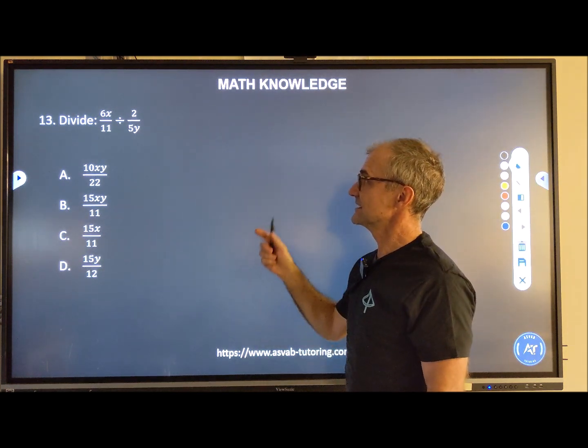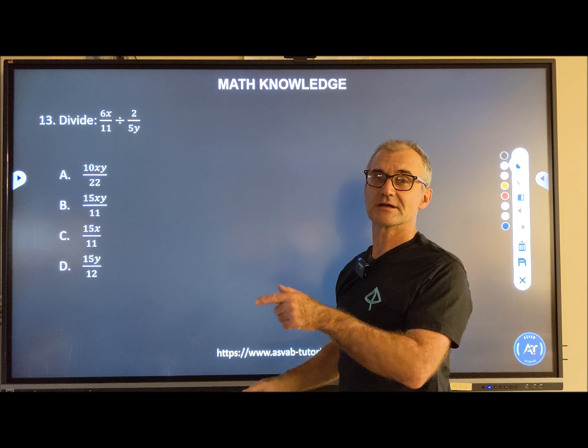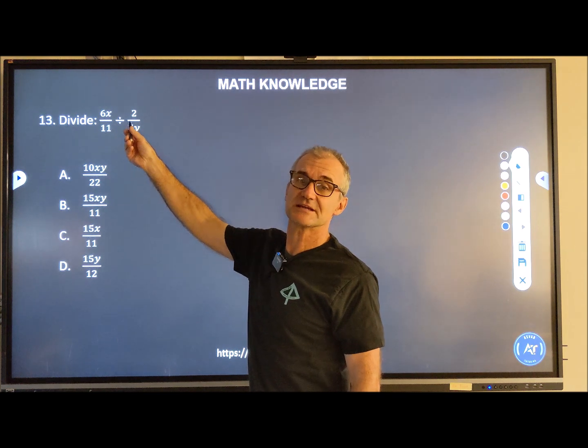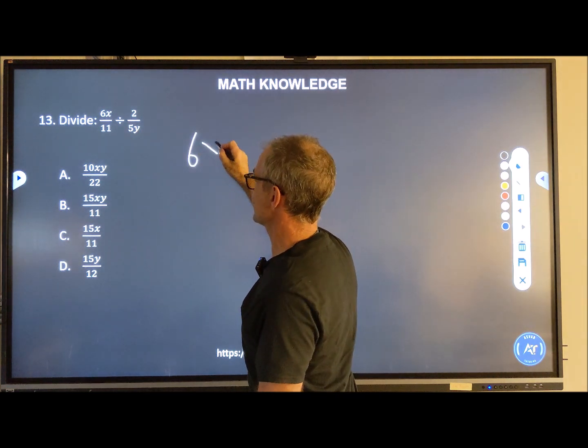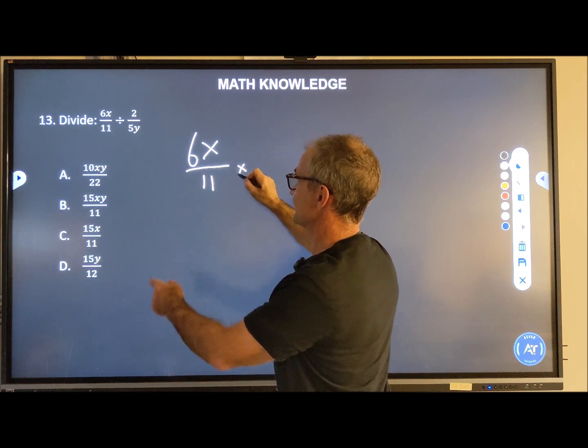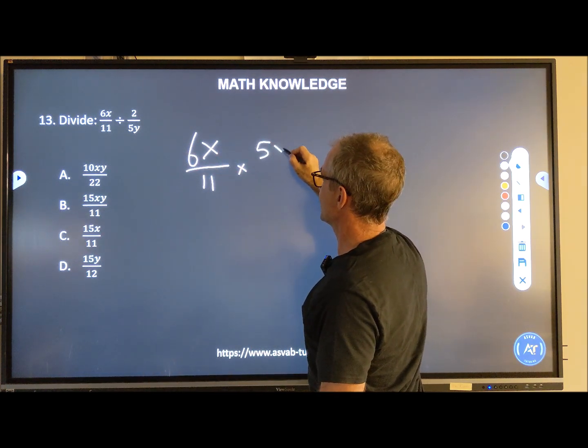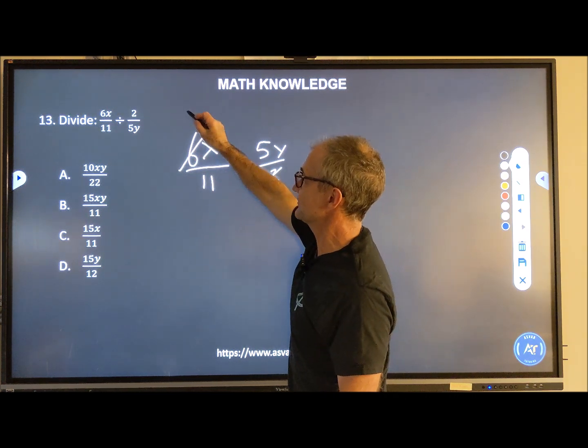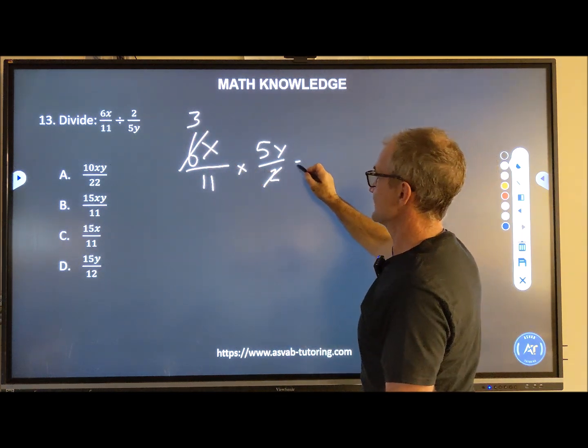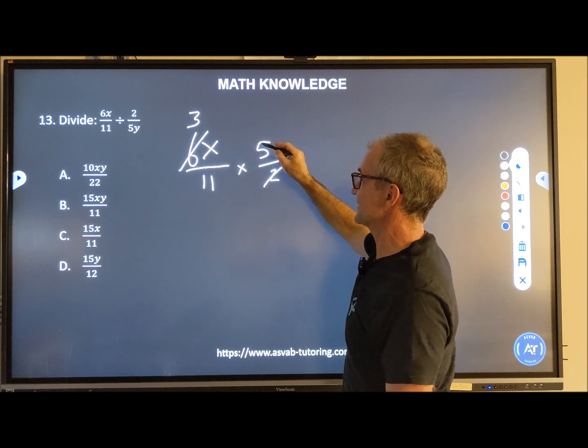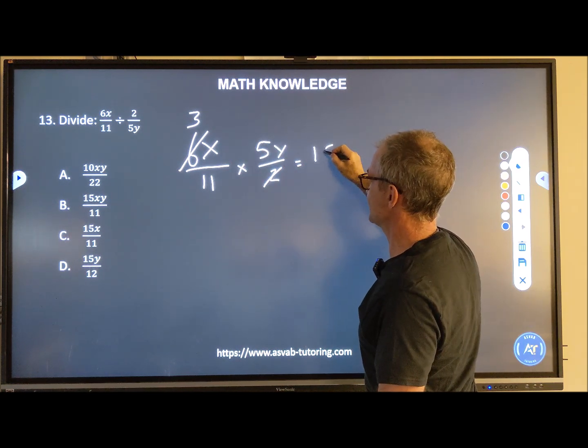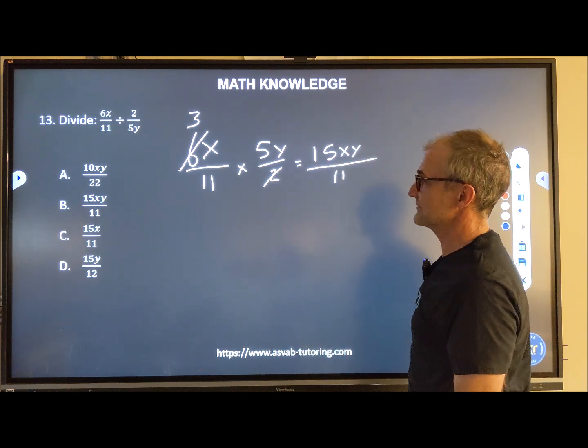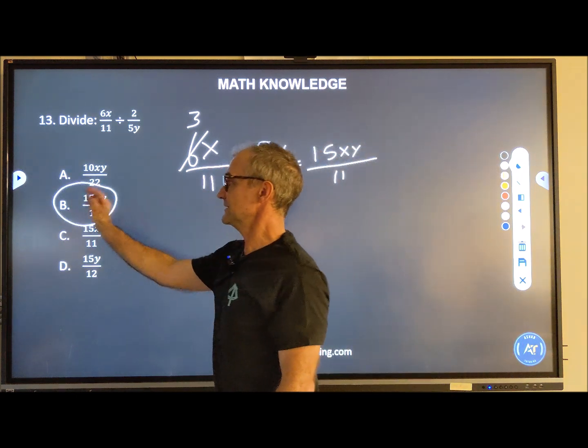Number 13, divide fractions. Dividing fractions is the same as multiplying by the reciprocal. So I'm going to turn this division into multiplication. Reciprocal means I flip the second term over. So I'm going to have 6X over 11 times this thing flipped over, 5Y over 2. Again, I'll look for common terms. 2 will go in here one time, into here three times. 5 and 11, nothing else will reduce. So in the numerator I have 3 times X times 5 times Y. The 3 and the 5 give me 15XY over 11 times 1, which is 11. And I can see my answer is answer B right here.